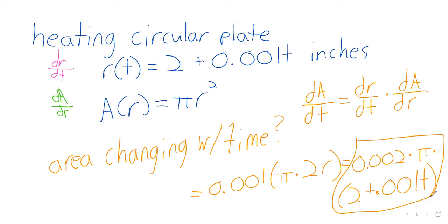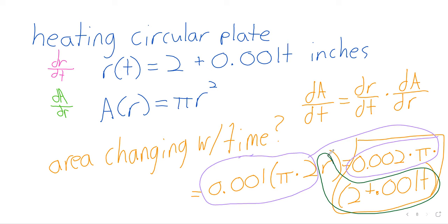And again, going over this one last time, this 0.001, this pi, and this 2 combined to give us that part of the answer. This r gave us that part of the answer. And that's version 1 of the chain rule.